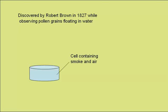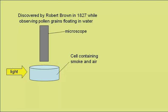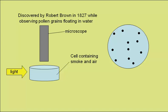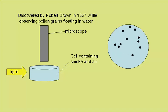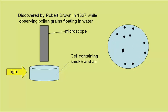We can get the same effect looking at a cell containing smoke and air. If we light the cell from the side and look from above with a microscope, we see something like this. The black dots represent the smoke particles, which can be seen to be jiggling around like this. If we trace the path of an individual smoke particle for a short time, we'd see something like this.